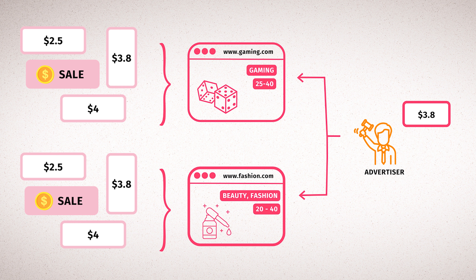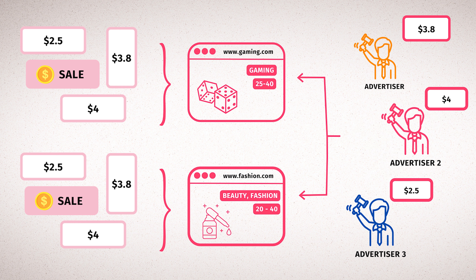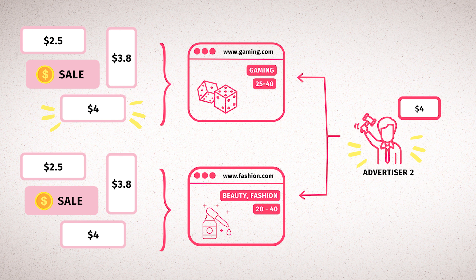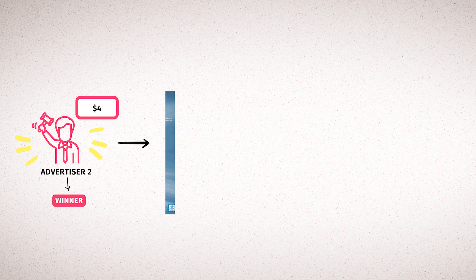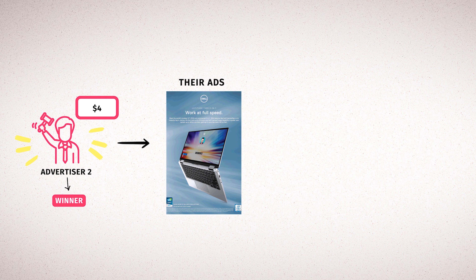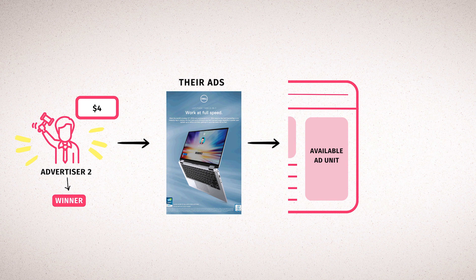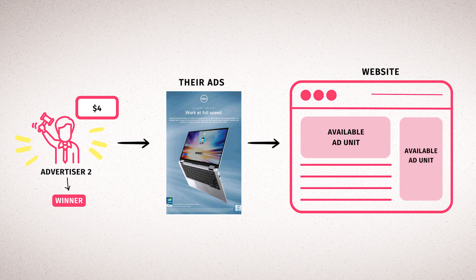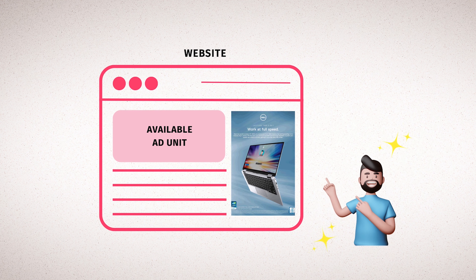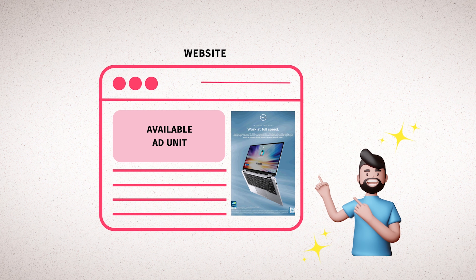The advertiser competes with other advertisers for the ad impression, placing bids in real-time. The demand side platform buys the impression and then the ad is shown on the publisher's website.